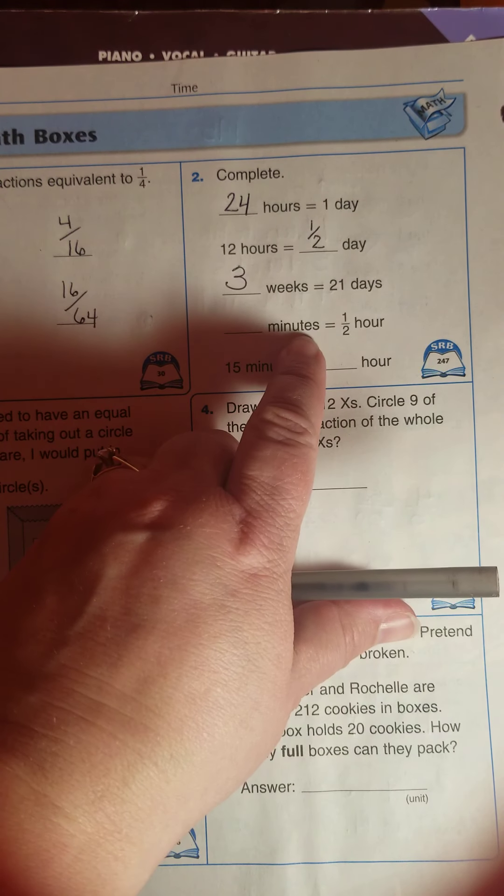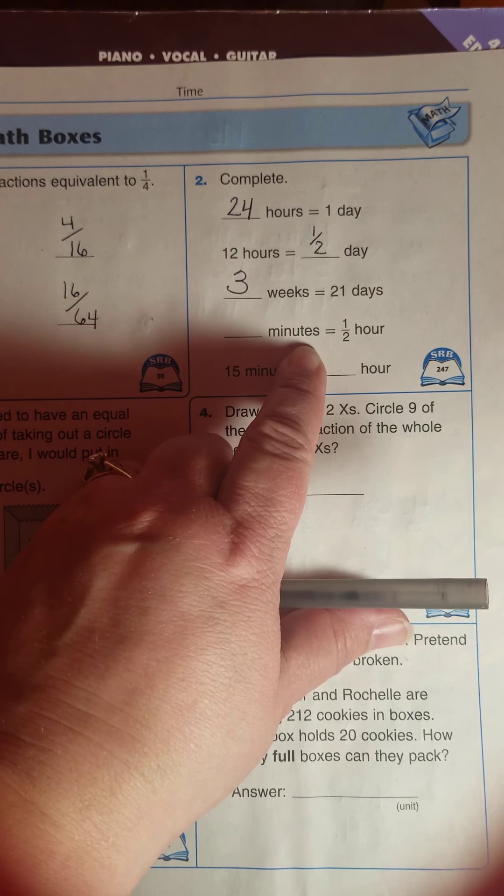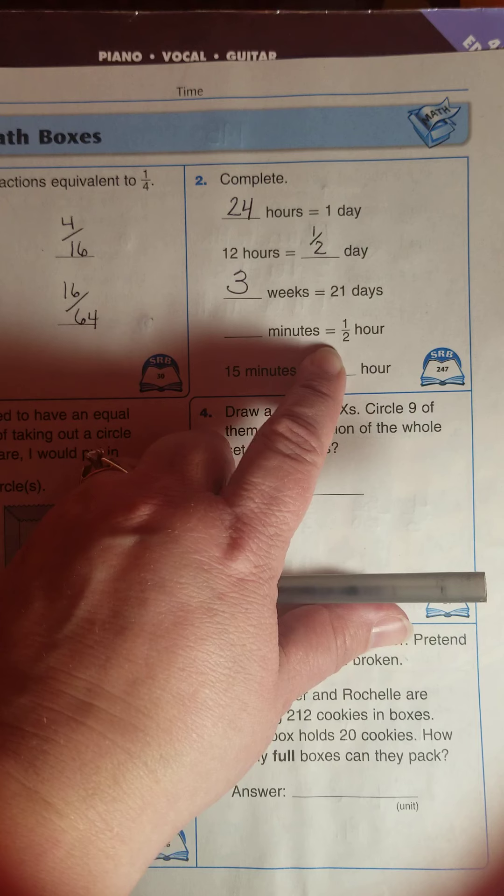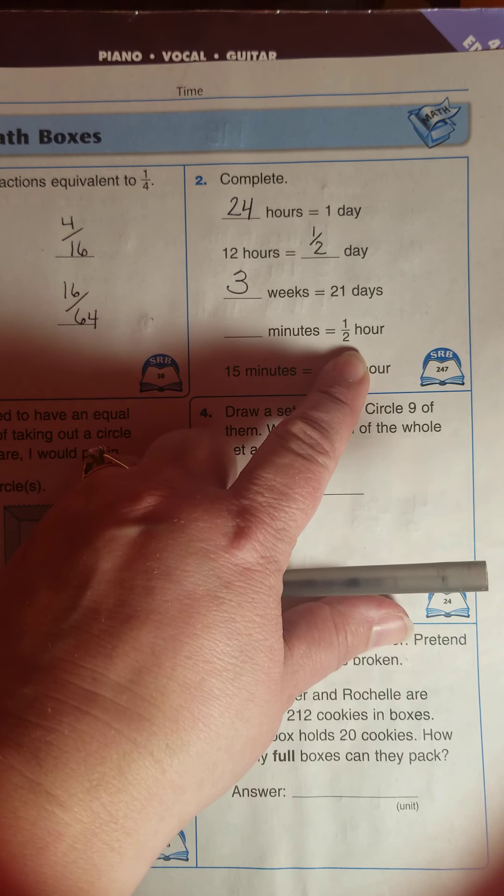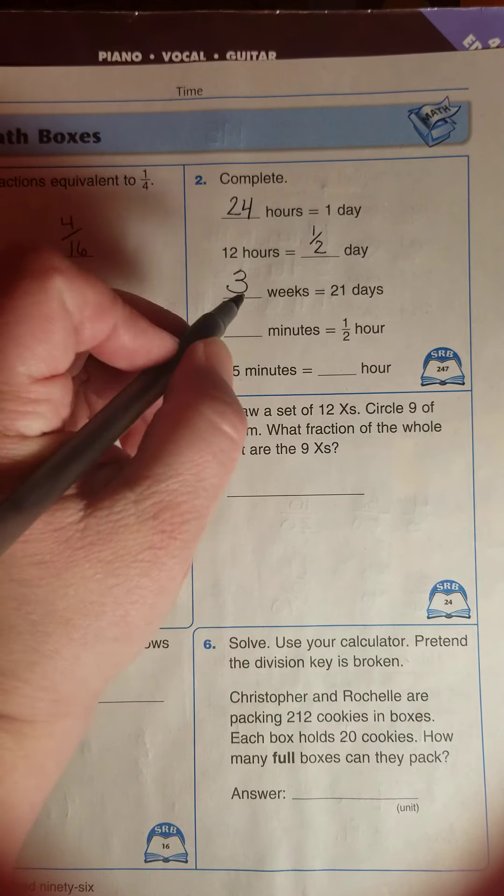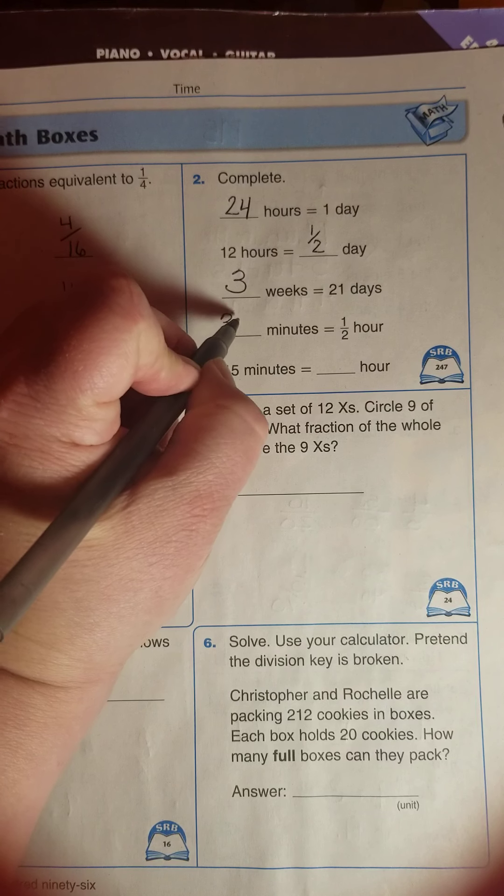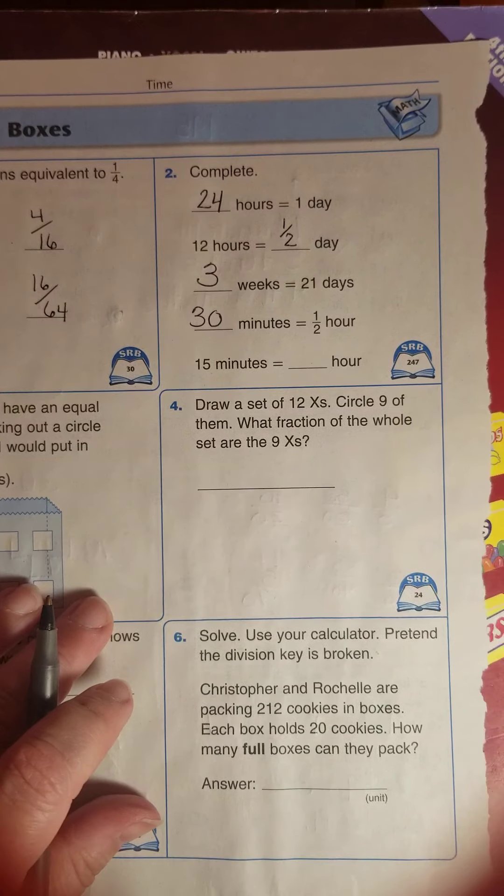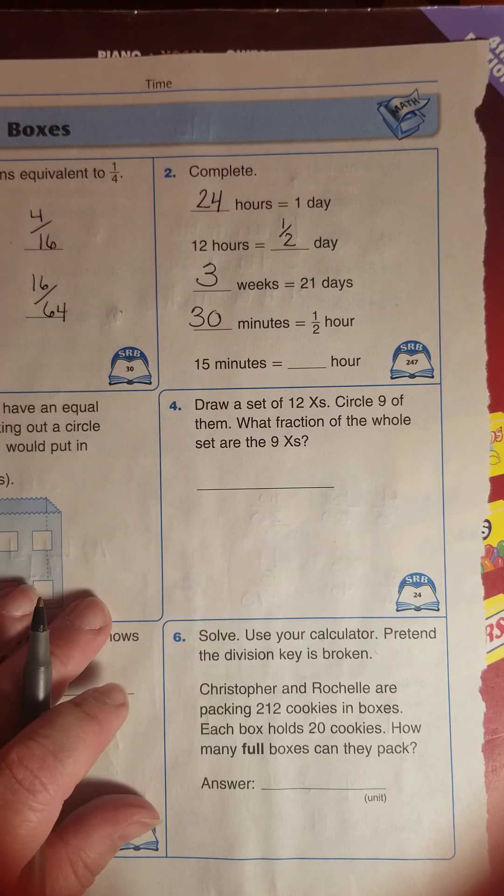How many minutes are in one half of an hour? Let's start by saying how many minutes are in one full hour, and that answer is sixty. If there are sixty minutes in one hour, how many minutes in a half an hour? What is half of sixty? Should be thirty minutes.